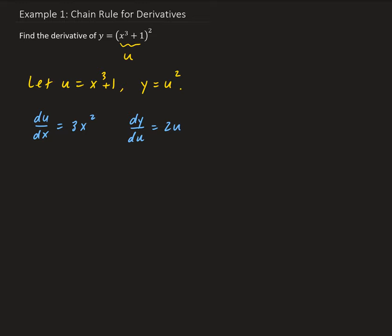The chain rule implies that if we have our independent variable, and we take the derivative of y — assuming that y is in terms of x — then dy/dx is equal to dy/du multiplied by du/dx. Applying this rule to what we have here, we'll be able to find our derivative.